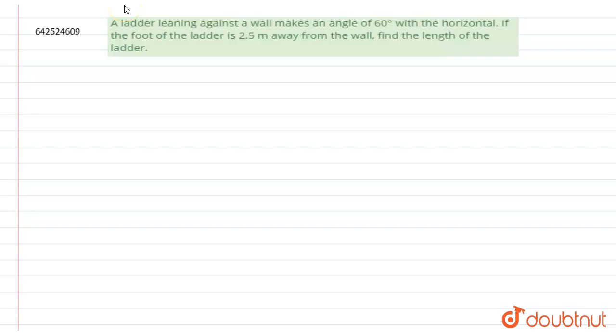It says: a ladder leaning against a wall makes an angle of 60 degree with the horizontal. If the foot of the ladder is 2.5 meter away from the wall, find the length of the ladder. Clear. So we have to find the length of the ladder.